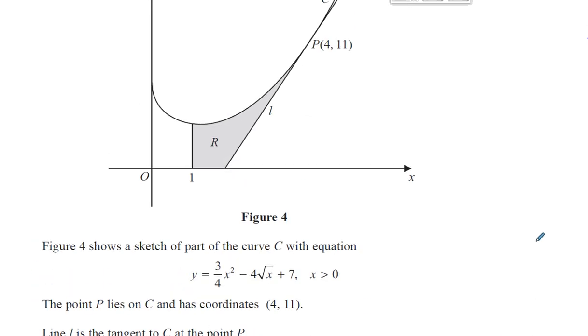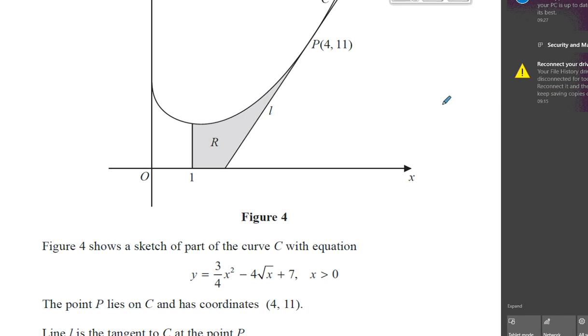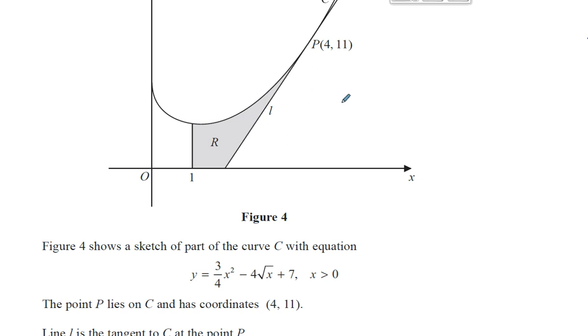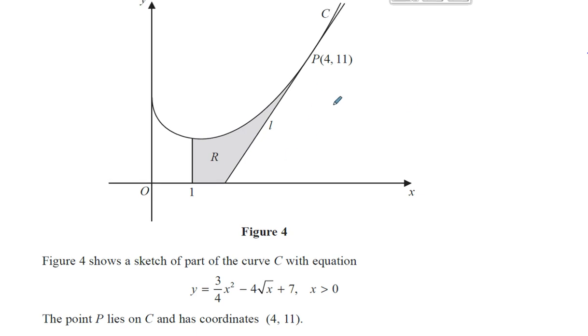So we need to find the area of this shaded region. Now this shaded region is under the curve, but it's not quite all the way to the x-axis in some parts. So what we need to do is we go to the point P. It goes up to the point P, this shaded region. And we'll drop it down here. We know that this is 4.